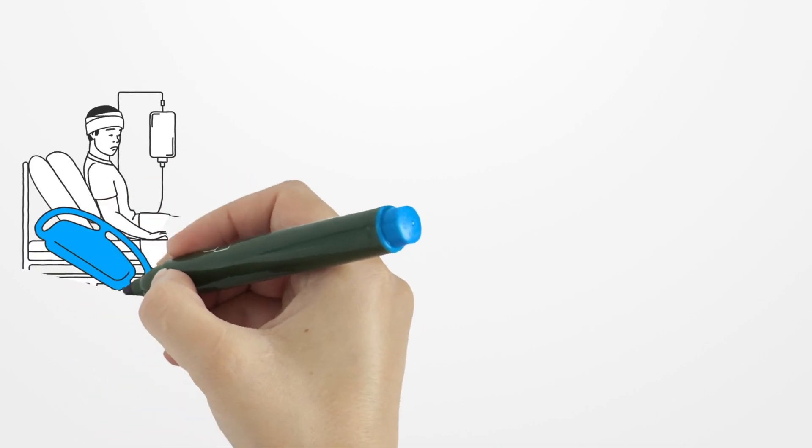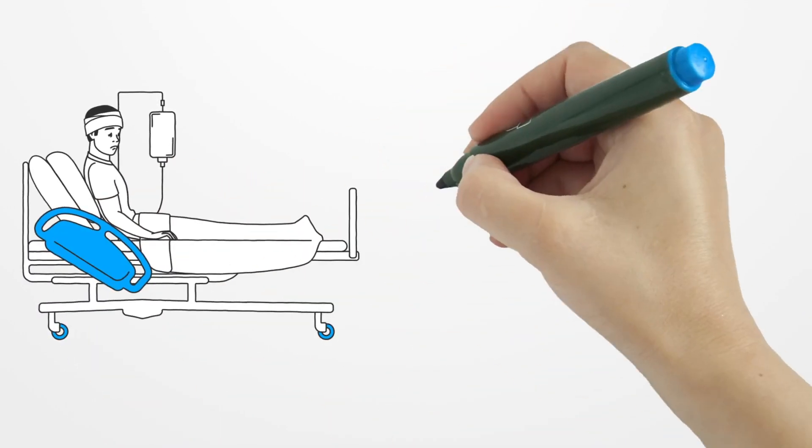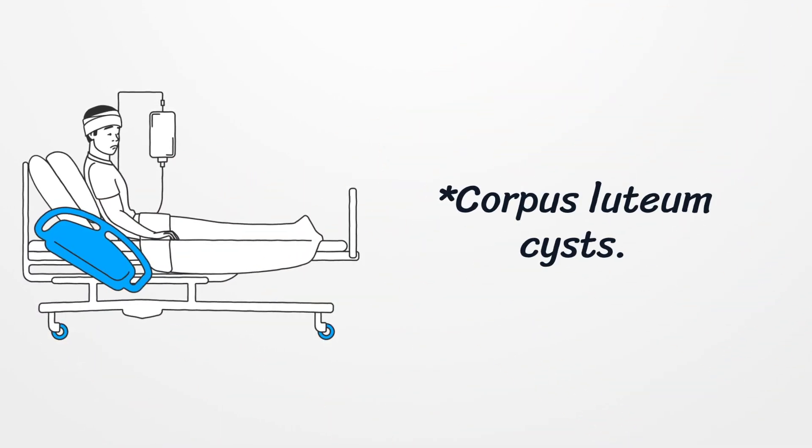Corpus luteum cysts may cause sudden amenorrhea as well as acute abdominal pain and breast swelling. Examination may reveal vaginal and cervical hyperemia.